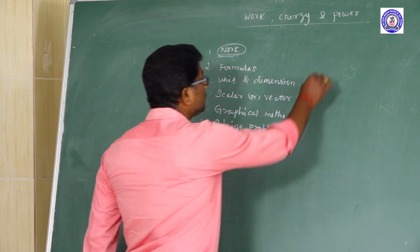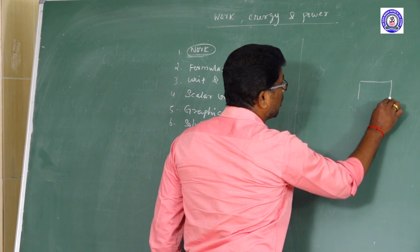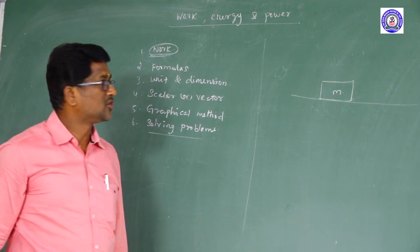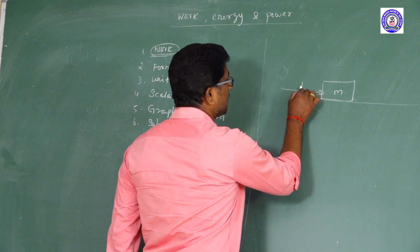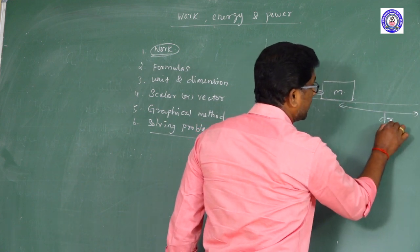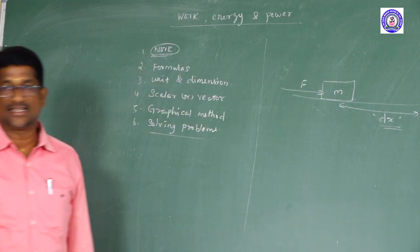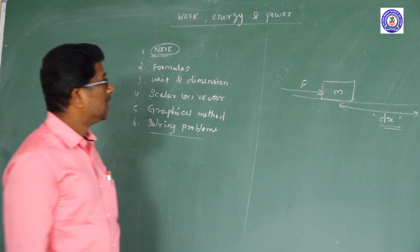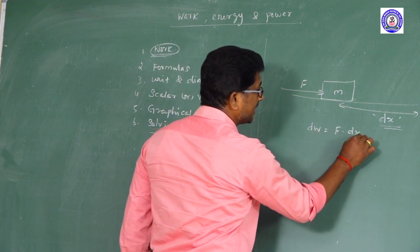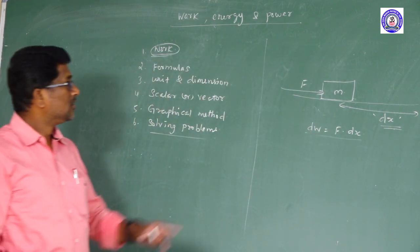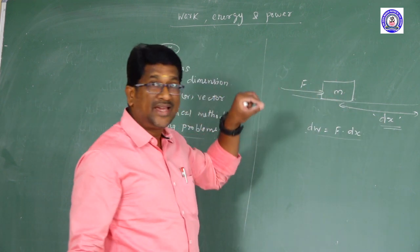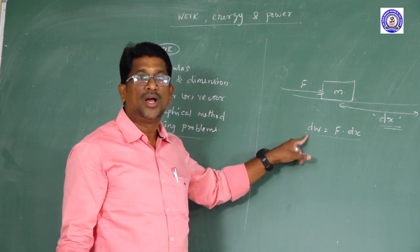Suppose let us consider a body of mass M which is placed on a horizontal surface. A force F is applied on the body, and due to the force the body moves through a distance dx. Here work is said to be done. The work done by the force is given by dw = F × dx.